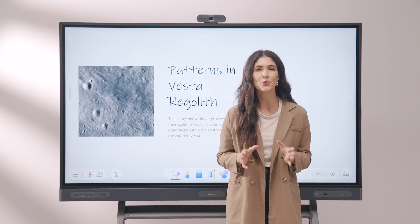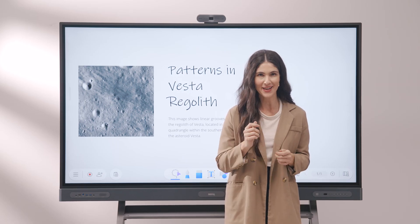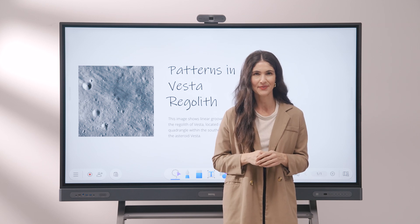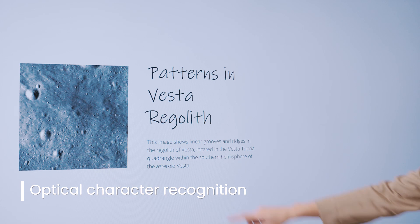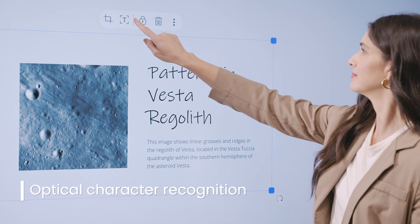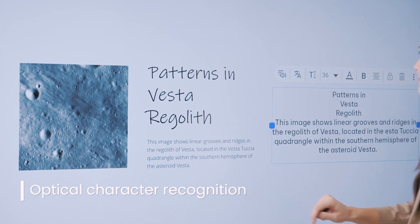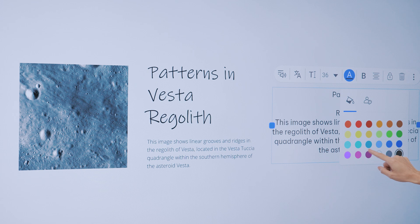To further assist you, we've introduced a suite of AI-powered tools as well. First up is OCR, or Optical Character Recognition, which extracts text from any image on the whiteboard and turns it into editable text that is easy to read and share.